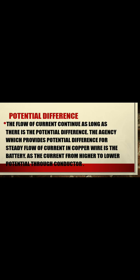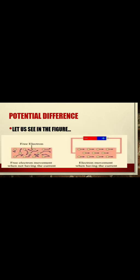The flow of current continues as long as there is a potential difference. As I mentioned, potential difference is compulsory in the circuit for the flow of current. The potential difference sets up energy so the charges get energy and start to move. As you can see in the figure, the negative charges — which are the electrons — are moving from the higher potential to the lower potential.